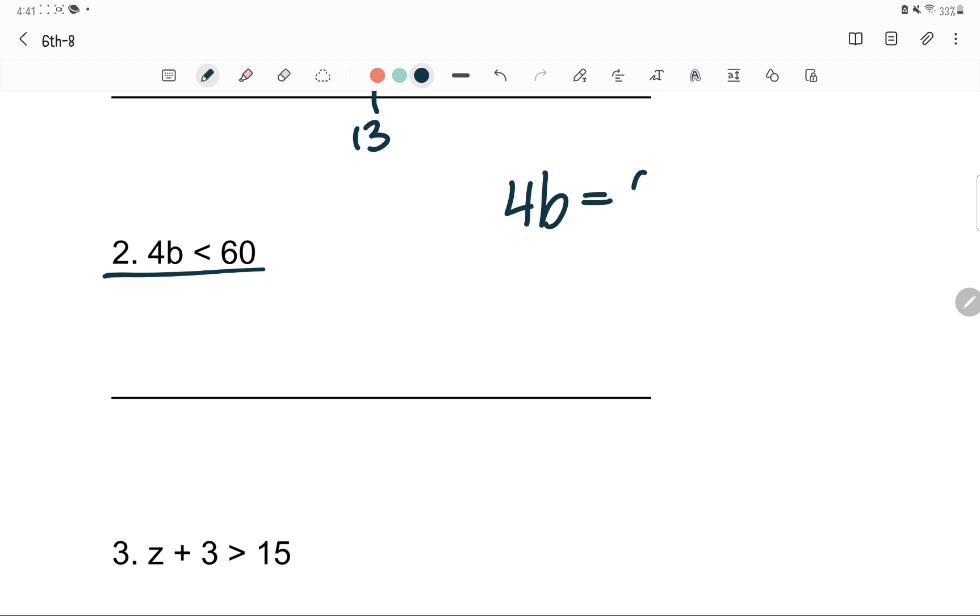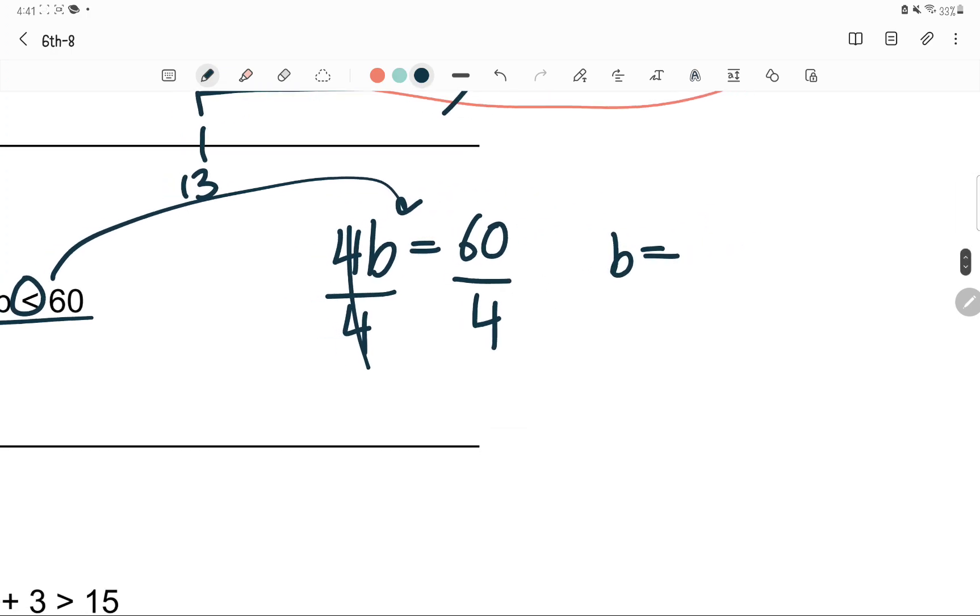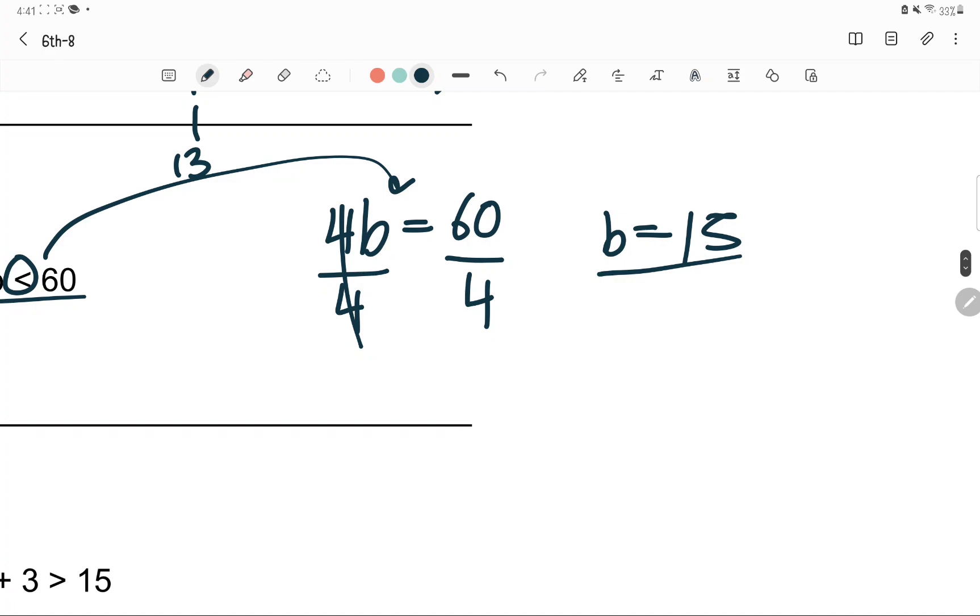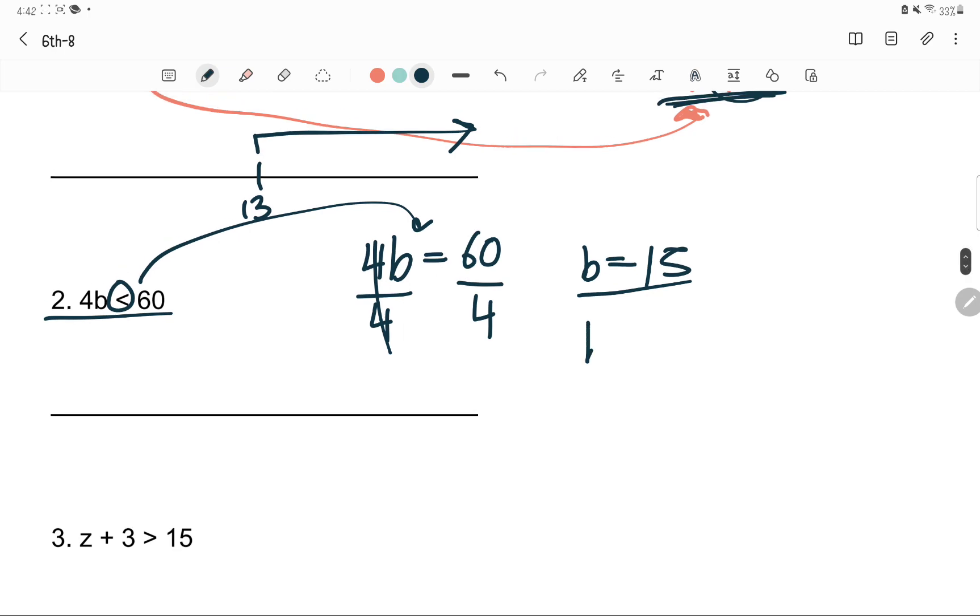Maybe number 2. 4B is less than or equal to 60. Notice how I changed this to an equal sign. It's easier to understand how to solve problems. Divide by 4 to cancel out 4, and B is equal to 15. What do you have to do? You divide positive numbers, so the symbol does not change. The inequality sign does not change. You just keep it as it is. B is less than 15.